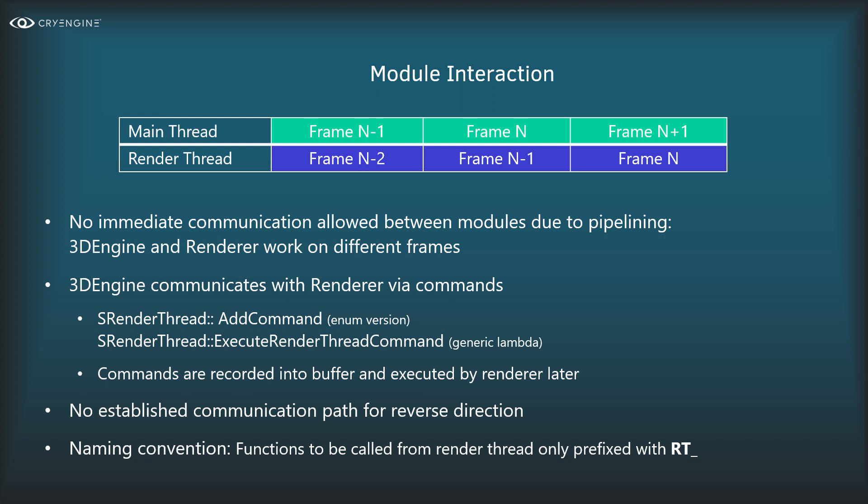This pipelining approach brings its own complexity. We cannot allow direct communication between the two threads because they are working on distinct frames. If the main thread sent data directly to the renderer, it would be in the wrong frame. So we introduced a command buffer — all communication goes through that. The 3D engine adds commands into the buffer, and at the frame sync the buffer is handed to the renderer to process.